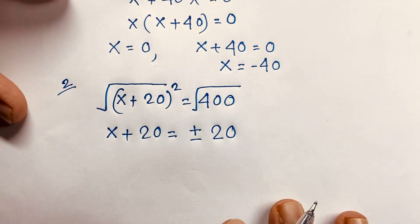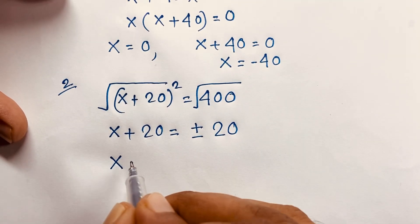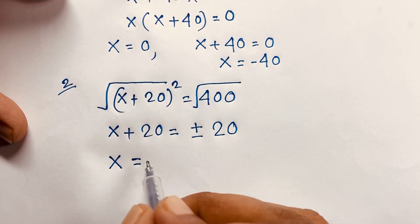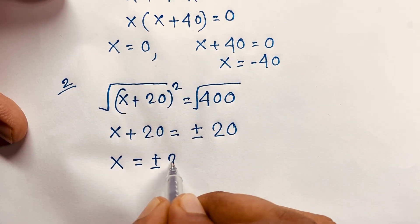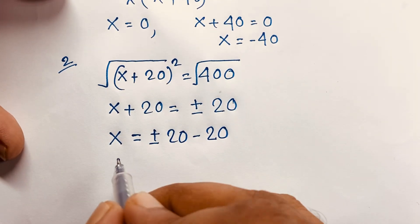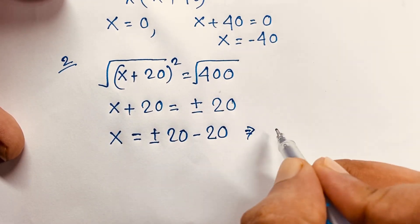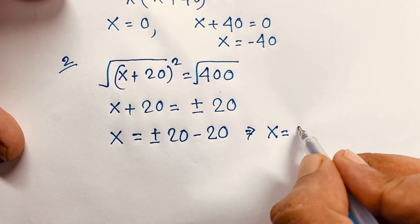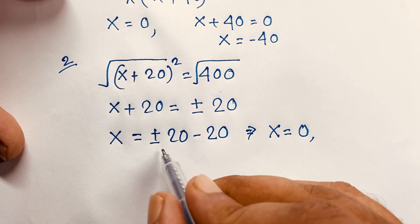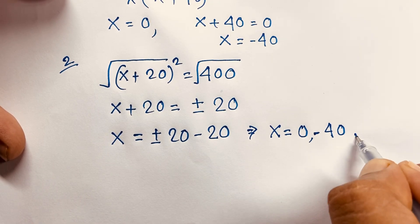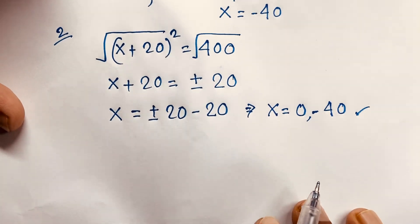Then I move the 20 to the other side, which gives x = ±20 − 20. If I take the positive value: +20 − 20 = 0. If I take the negative value: −20 − 20 = −40. So our final answer is x = 0 or x = −40.